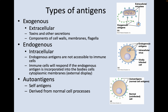Let's talk about three different types of antigens. We have exogenous antigens, which are extracellular — they may be toxins and other secretions, components of cell walls, membranes, or flagella — something outside of the pathogen itself that is a cue to your immune system that it's a foreign invader. Endogenous or intracellular antigens are not accessible to immune cells; immune cells will respond if the endogenous antigen is incorporated into the cell body's cytoplasmic membranes, so if there's some kind of external display.